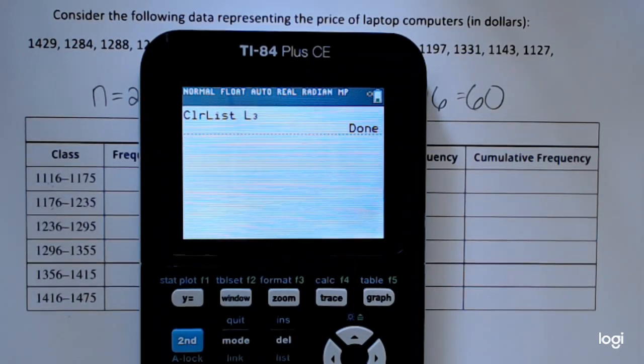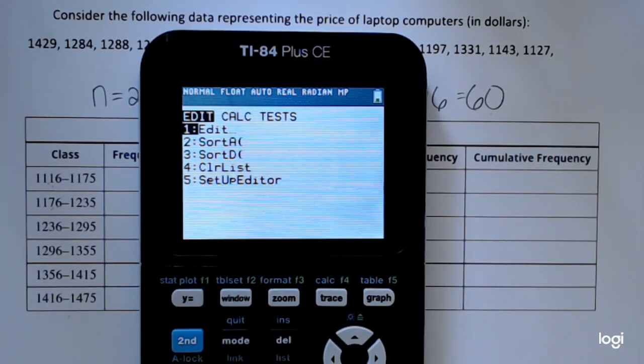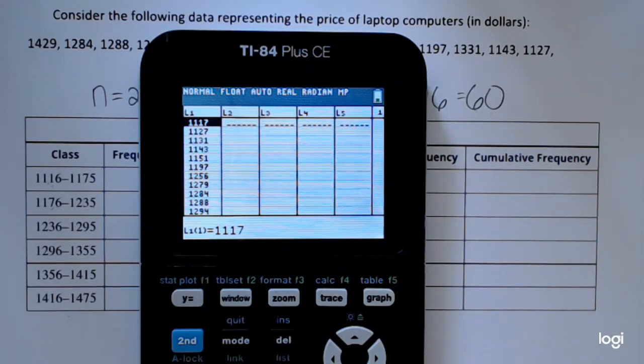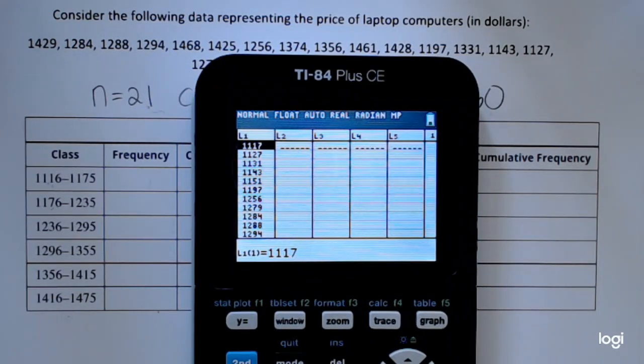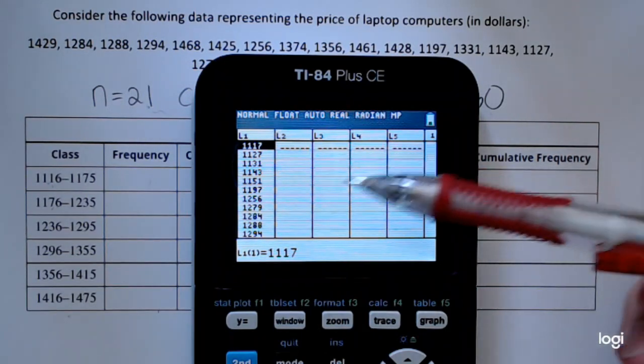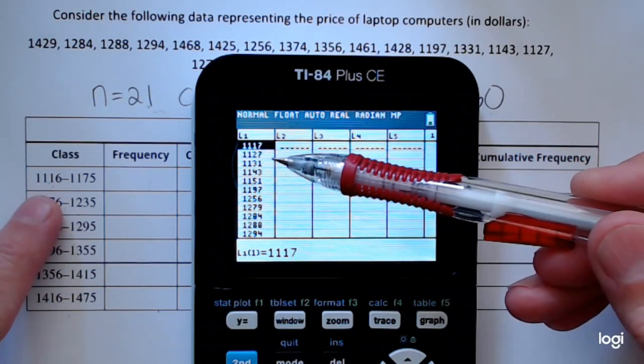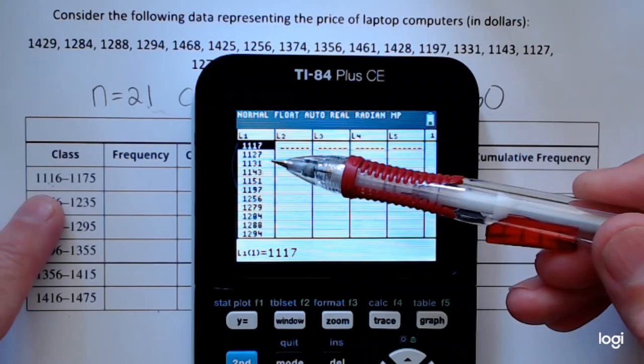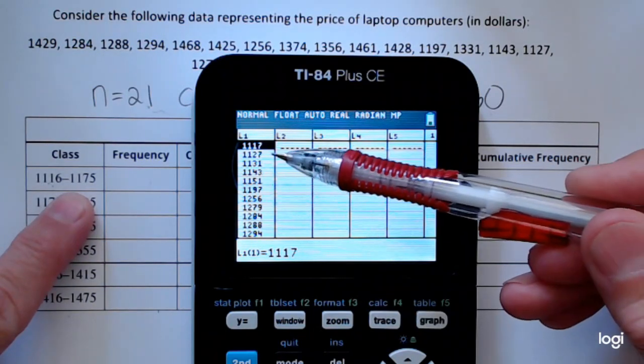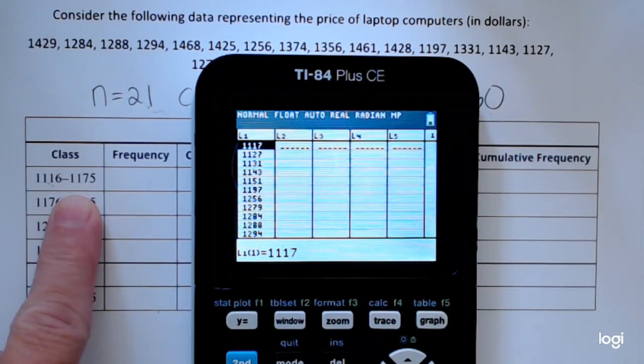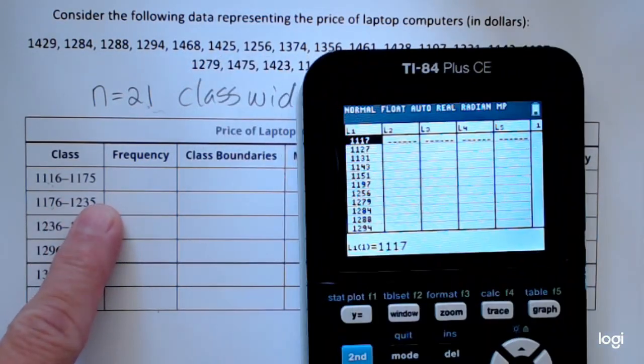Go back to stat and then edit, and you'll see that my data set is put in order. Now this part is a little cumbersome. Fortunately this is a small data set of only 21 values, so I can just scroll down. My first class goes from 1116 up to 1175.